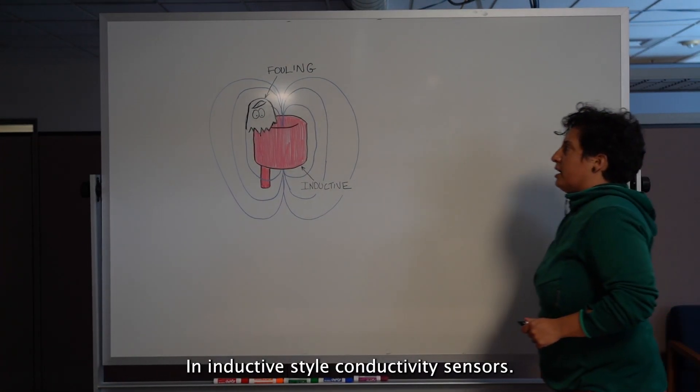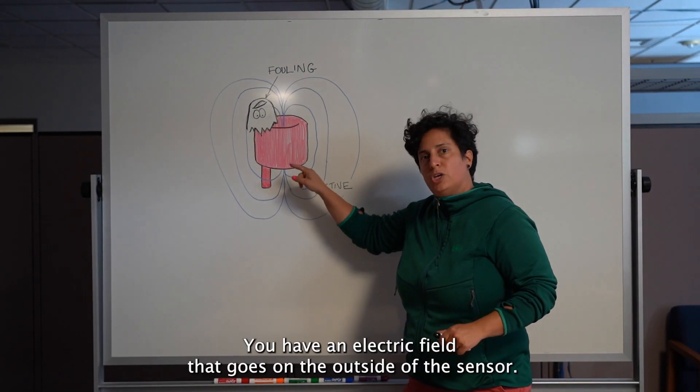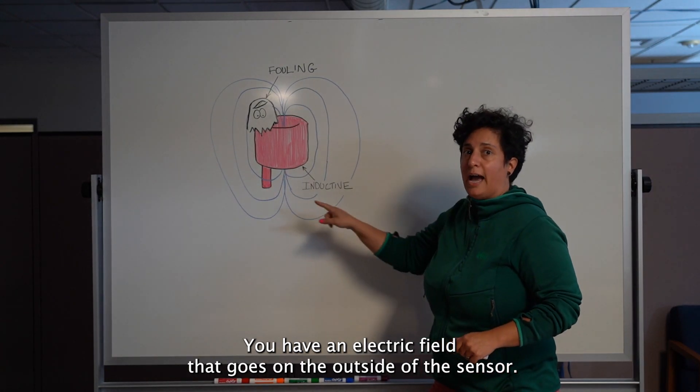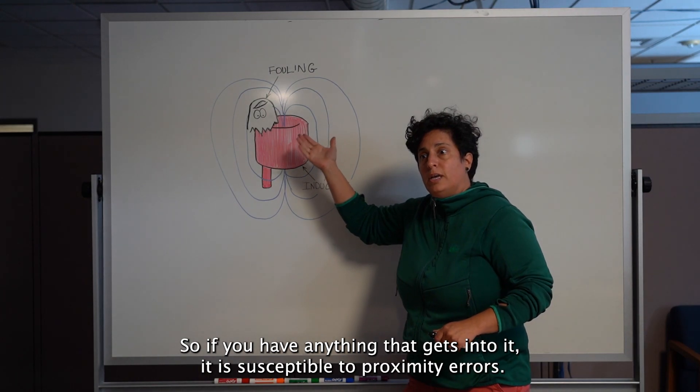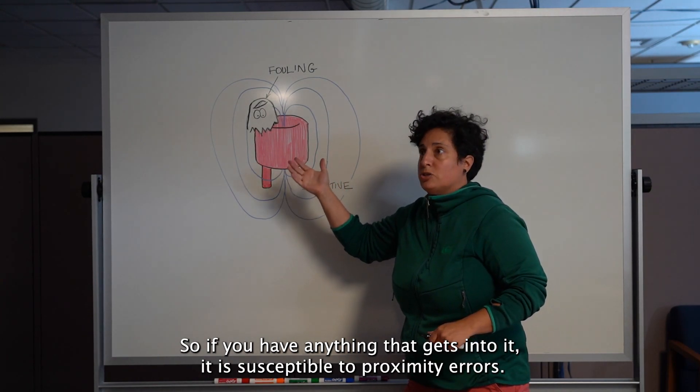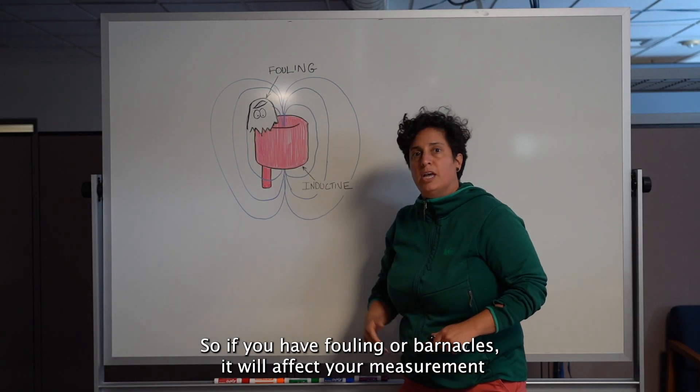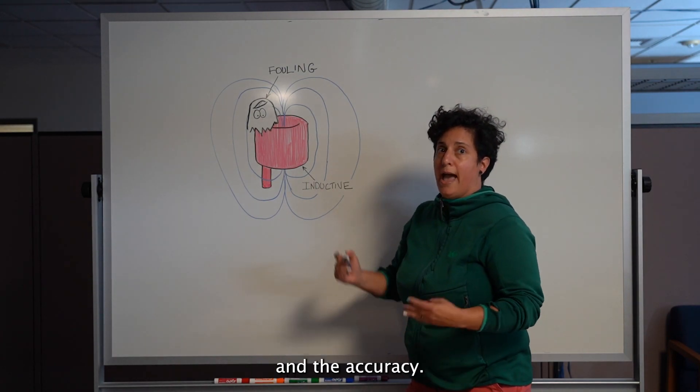In inductive style conductivity sensors, you have an electric field that goes on the outside of the sensor. So if you have anything that gets into it, it is susceptible to proximity errors. So if you have fouling or barnacles, it will affect your measurement and the accuracy.